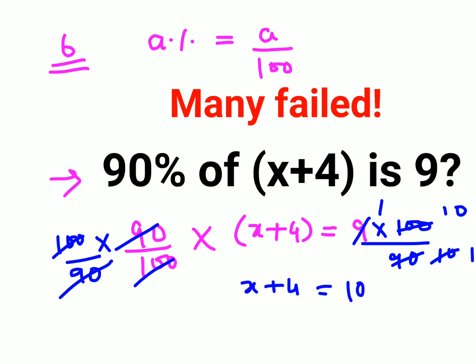So in order to find the value of x, you will subtract 4 on both sides. So now I can say therefore value of x is nothing but just 6.